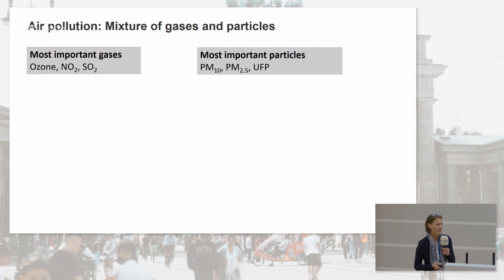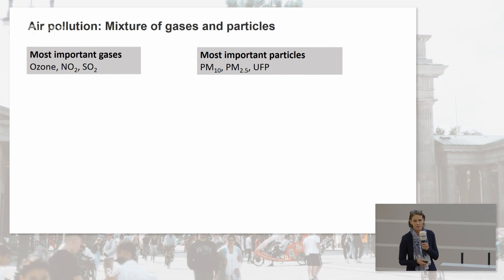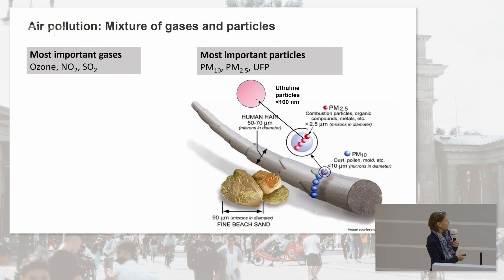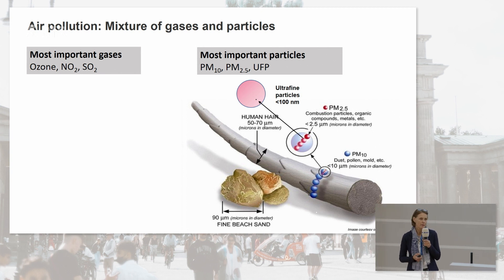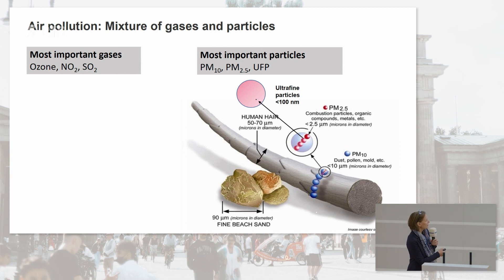So what is air pollution? It's a mixture of gases — the most important ones are ozone, nitrogen dioxide, and sulfur dioxide — and of particles. The most important particles we look at in terms of regulation are PM10 and PM2.5. PM10 means particulate matter with a diameter of less than 10 micrometers. PM2.5 particles are smaller than 2.5 micrometers. And then there are ultrafine particles, which are smaller than 100 nanometers.